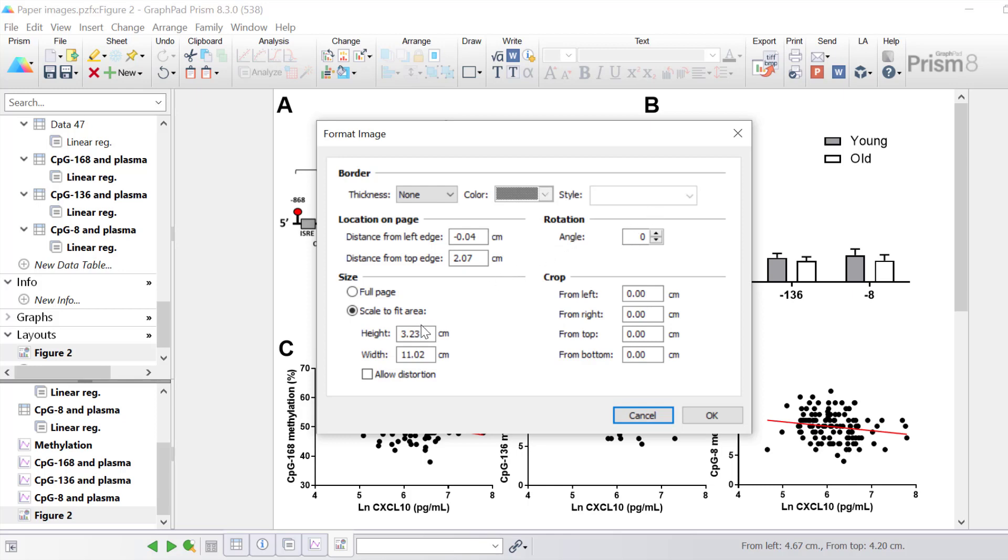You can change the scaling of the image. Prism will keep the same image ratio. However if you want to change the height and width independently you have to click the allow distortion option and then you can change each value independently.